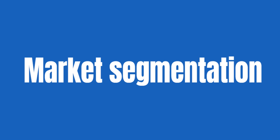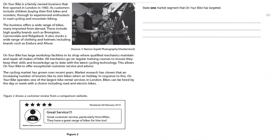Market segmentation questions. State one market segment that On Your Bike has targeted — it's a one mark question. On Your Bike is a family owned business that first opened in London in 1983. Its customers include children buying their first bikes and scooters through to experienced enthusiasts in road cycling and mountain biking. The business offers a wide range of bikes, many imported from abroad, including high quality brands such as Brompton, Cannondale and Ridgeback. It also stocks a wide range of clothing and helmets including brands such as Endura and Altura.